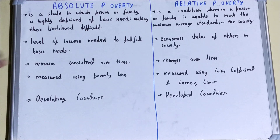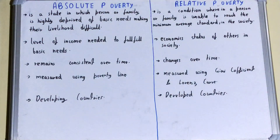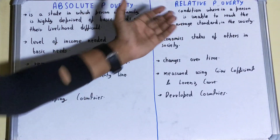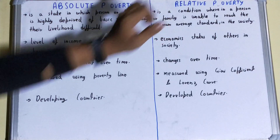In the case of absolute poverty, it is a state in which a person or family is highly deprived of basic needs, making their livelihood difficult — they are not able to maintain their livelihood. In the case of relative poverty, it is a condition wherein a person or family is unable to reach the minimum average standard in the society they are staying in. If a person or family is staying somewhere and is not able to match the standard of that particular society, that is relative poverty.